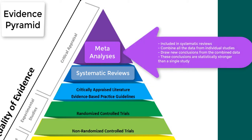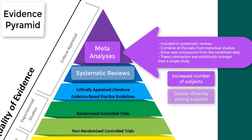Meta-analyses are often included in systematic reviews. They use statistical techniques to combine all the data from the individual research studies, and they use the pooled data to come to new statistical conclusions. These conclusions are statistically stronger than the analysis of any single study because of the increased number of subjects, the greater diversity among subjects, and the accumulated results.